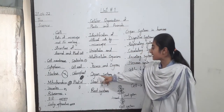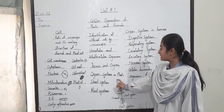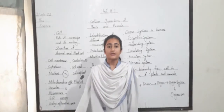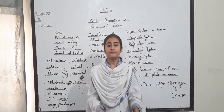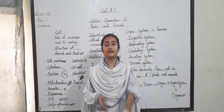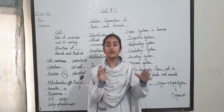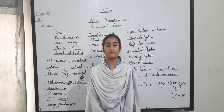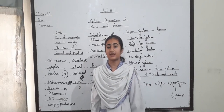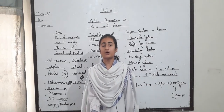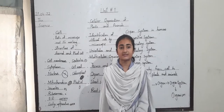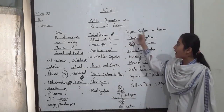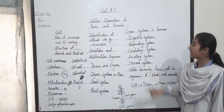Next I discuss about organ systems in plants: shoot system and root system. The shoot system refers to the parts of a plant that are above the ground, and the root system refers to the parts of the plant that are below the ground.